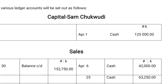Let's move to the various ledgers. The first one is to prepare the cash account — that is Chukwadu's cash account. Like I've said, the capital appears at the debit side of the cash book, so it's going to appear at the credit side now. So we have the date: April 1st, cash, and the amount is 125,000.